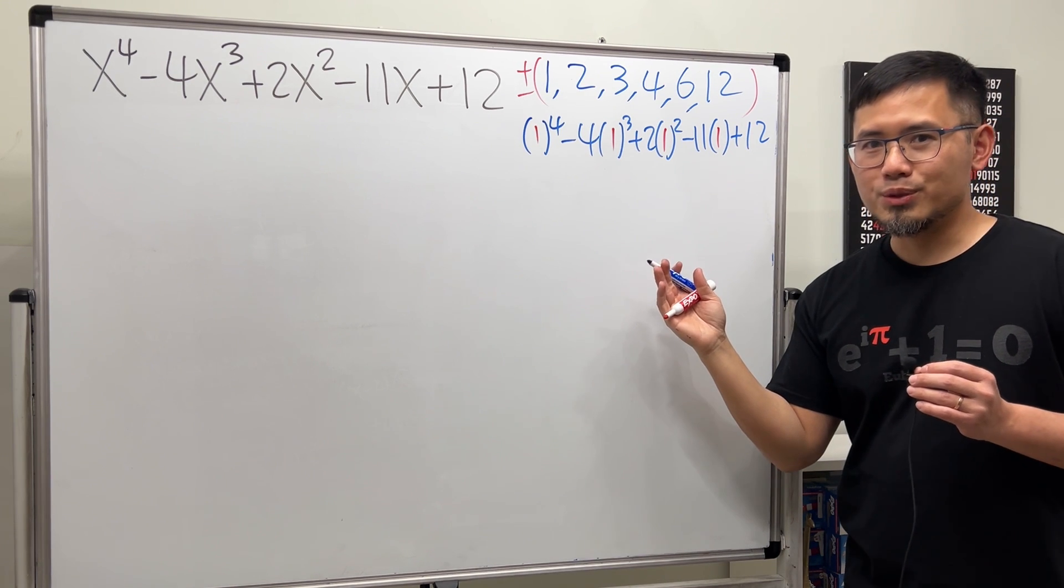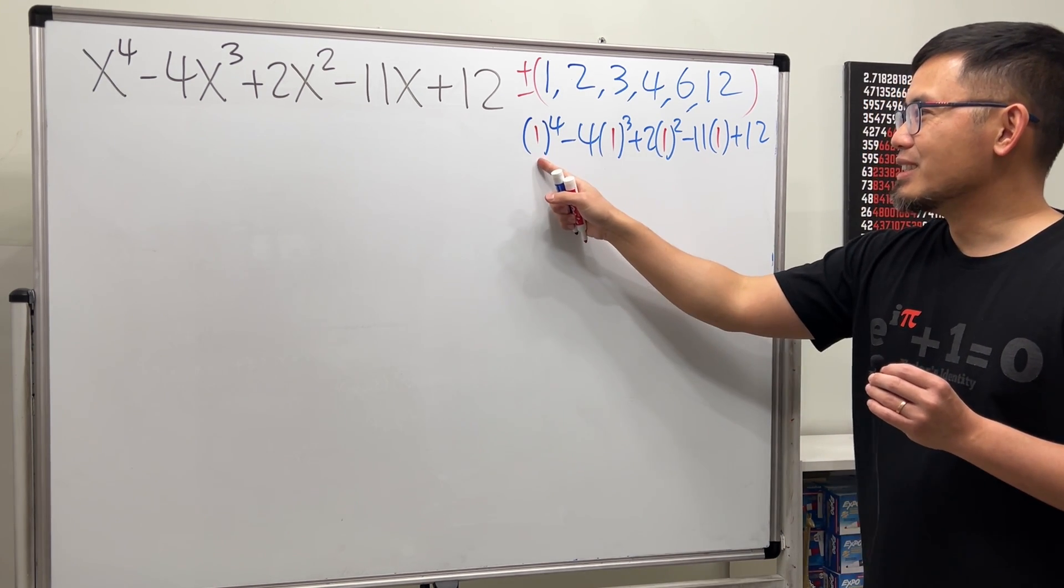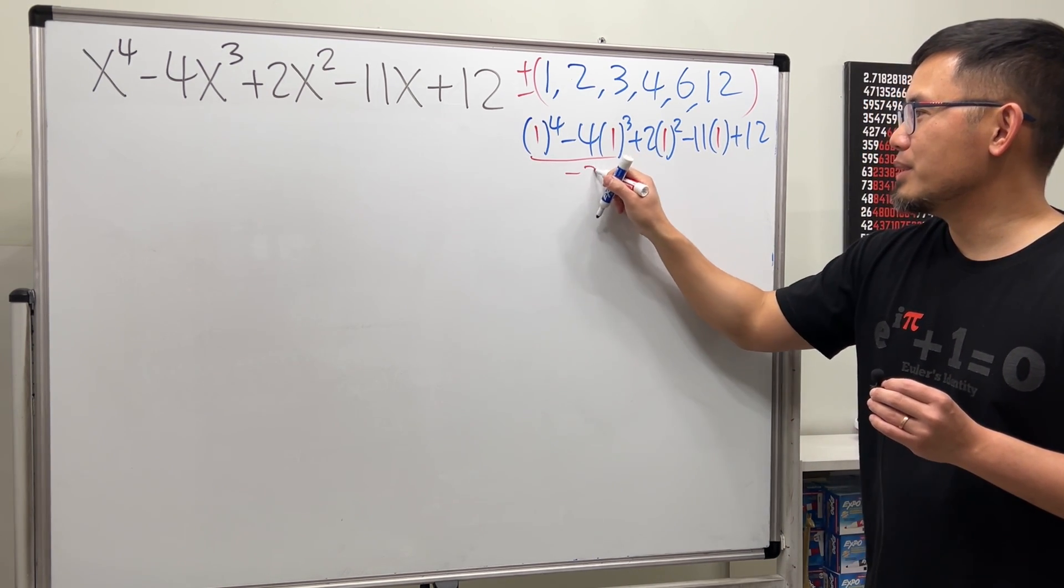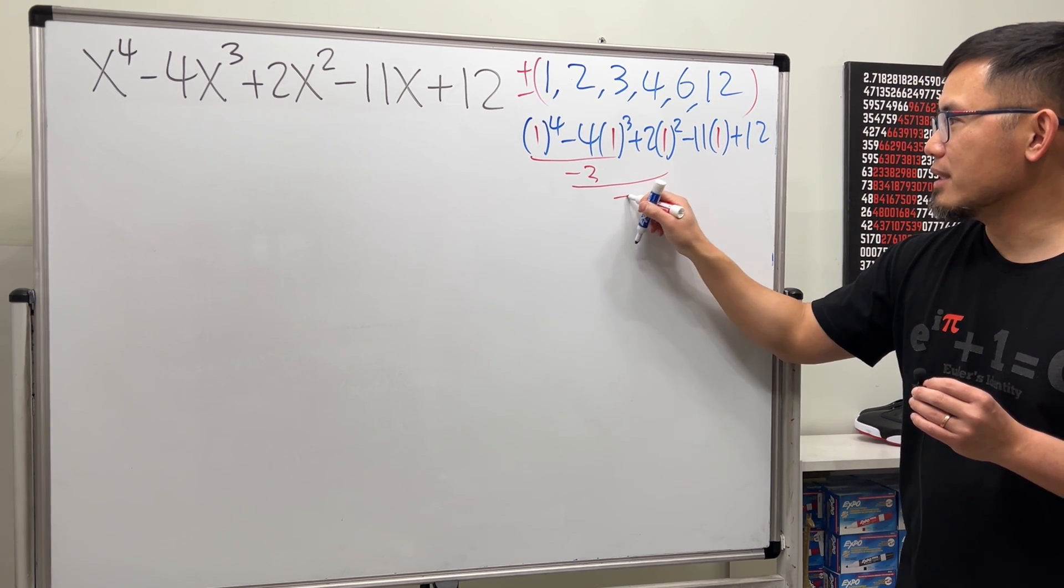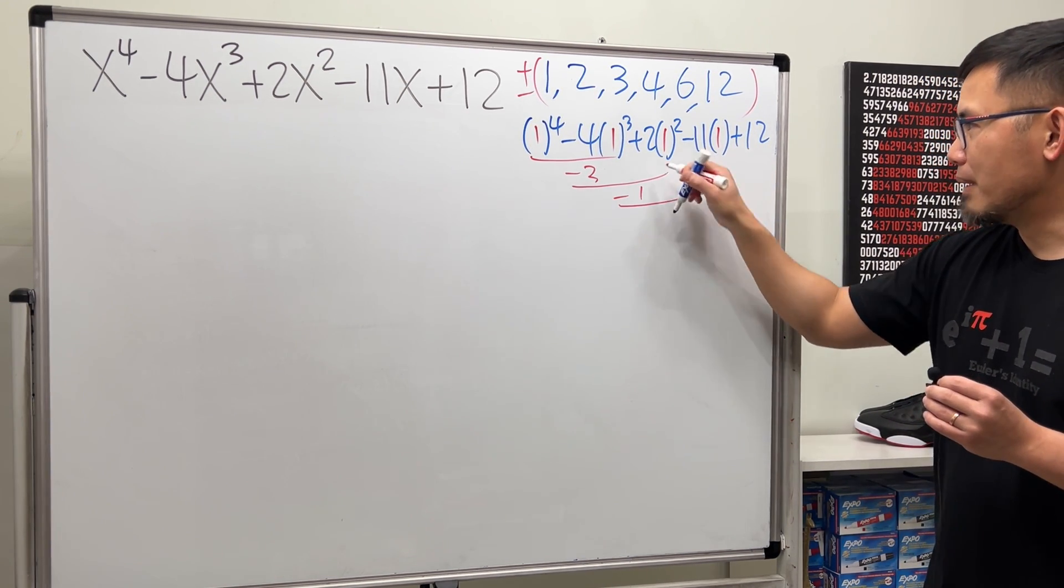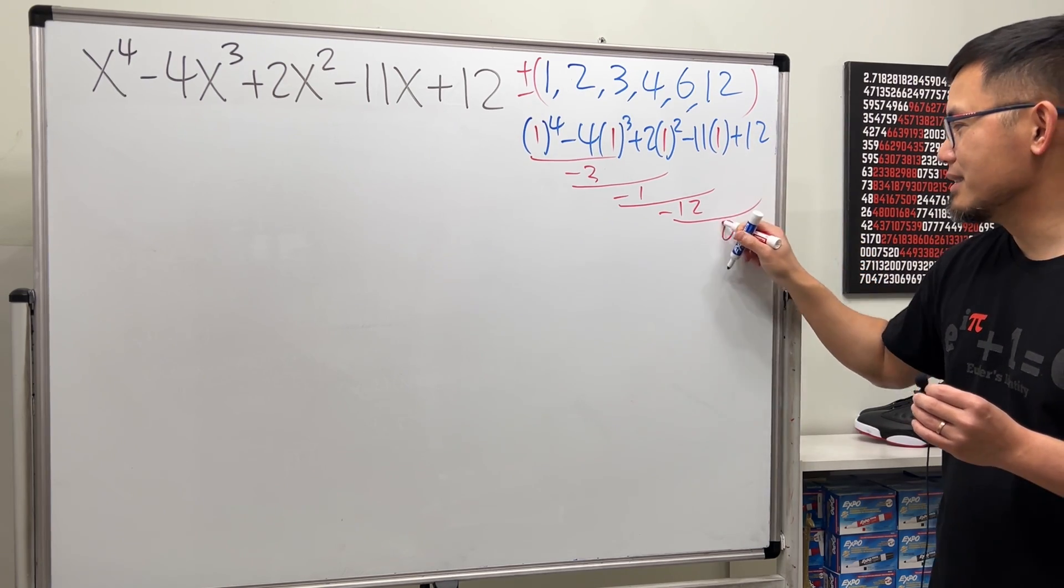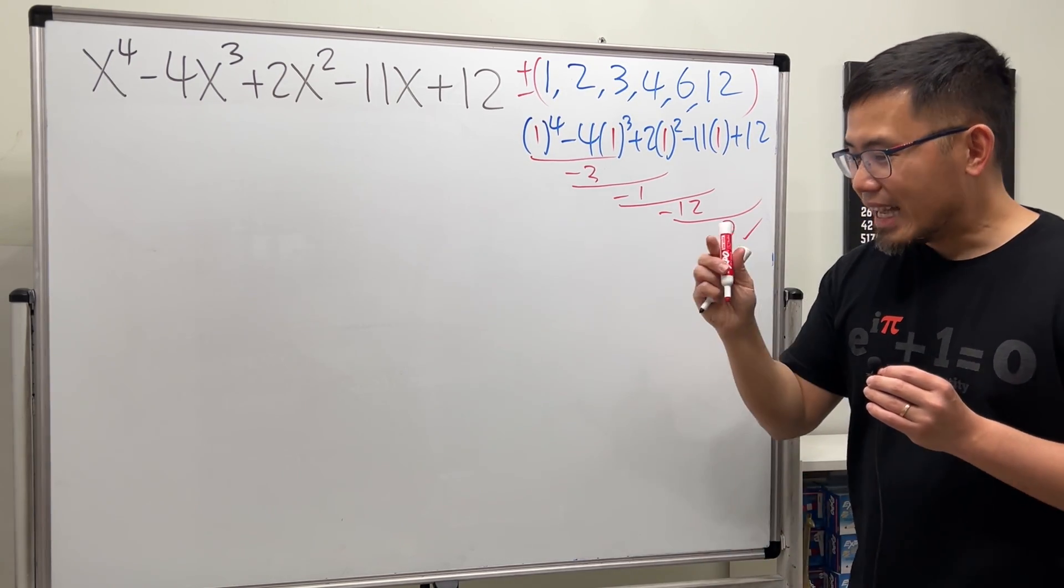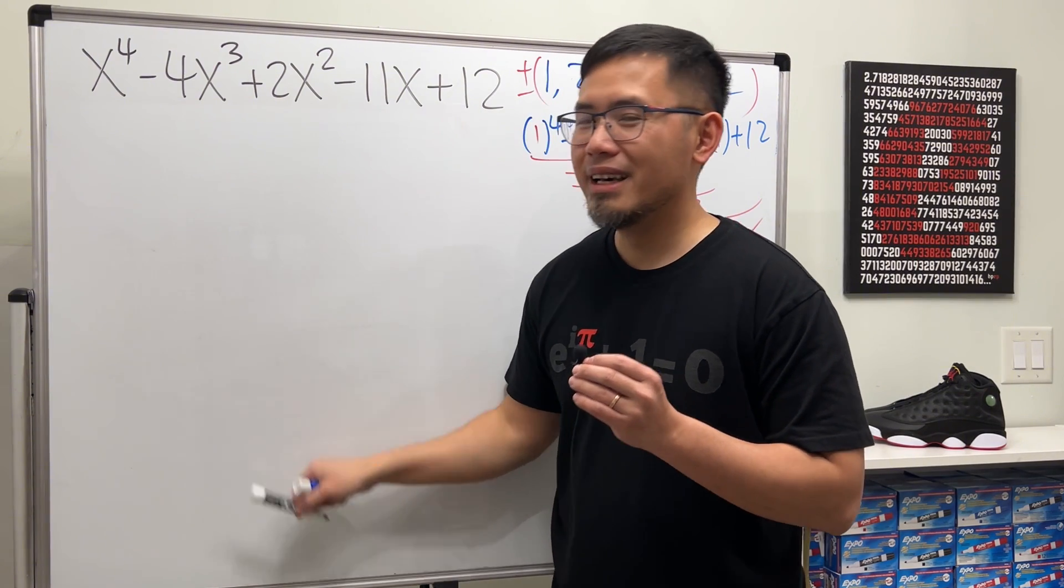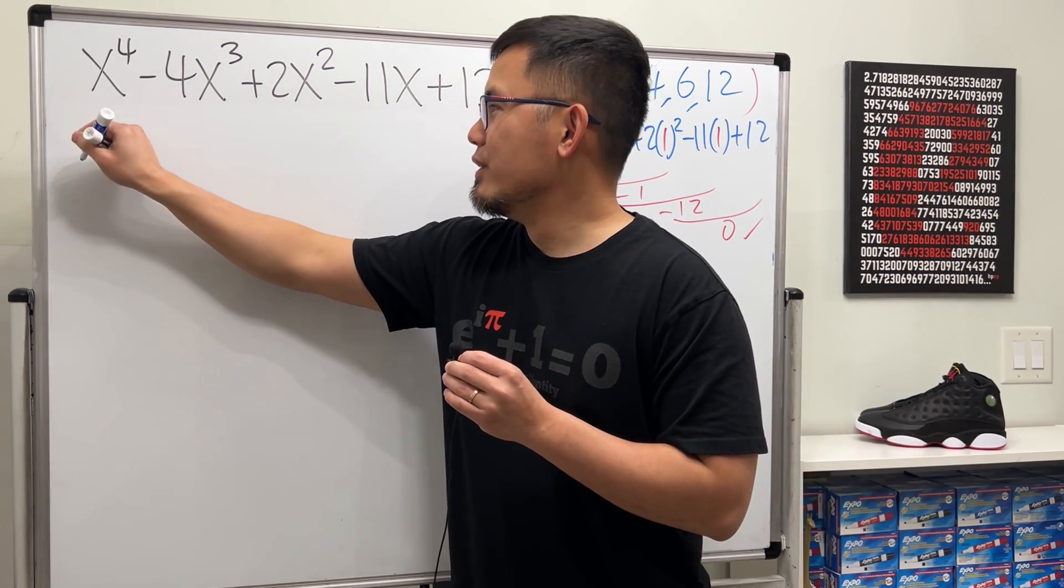Do we end up with zero? Yes. This is 1 minus 4 is negative 3, and then plus 2 is negative 1, and then minus 11 is minus 12, and then lastly you add the 12 so it's indeed equal to zero. That means we can be happy and come back here and say note that